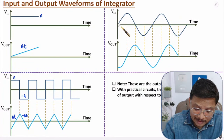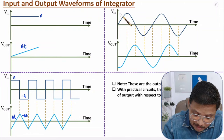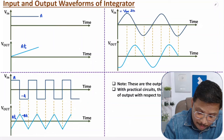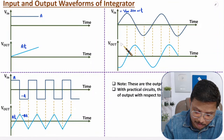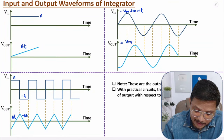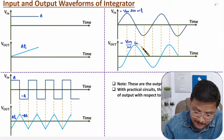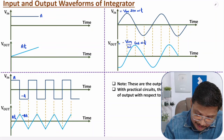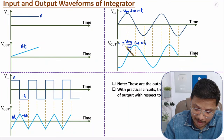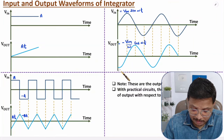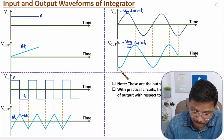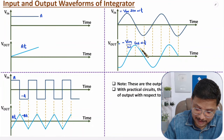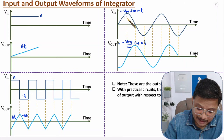Now, if your input is a sinusoidal one, then what is the output? The input is Vm sin(ωT). The output should be the integration of this. Vm is constant; the integration of sin(ωT) is (1/ω) and sin is converted to minus cos. So the output will be minus of (Vm/ω) cos(ωT). Minus cosine means it initiates from the negative maximum value. So the minus cosine signal looks like this, whereas the plus sine signal looks like this — integrator performs integration of input.